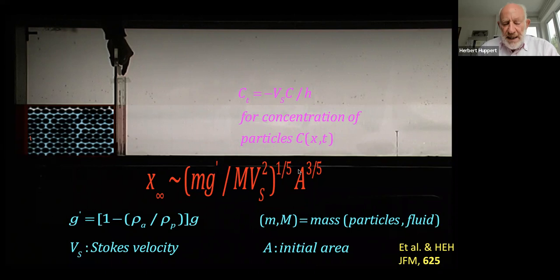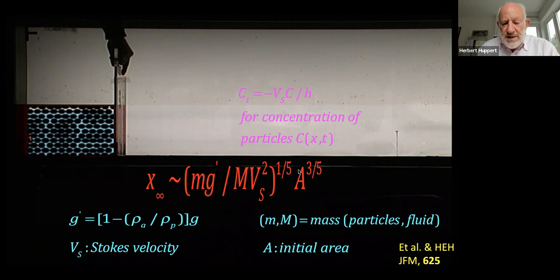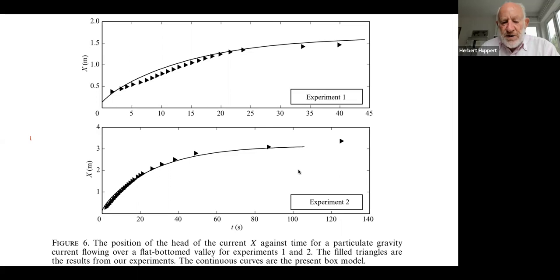This is just particles — not light fluid — at a distance given by the mass of the particles times G prime, the effective gravity, one minus the density of the air into which it's moving over that of the particles, times G, divided by the mass of the fluid, times the Stokes velocity squared, all to the one-fifth power, times the initial area to the three-fifths power. We did some experiments of how the position should change as a function of time, and here you see the box model — the solid curves — and the experimental verification for different initial conditions.